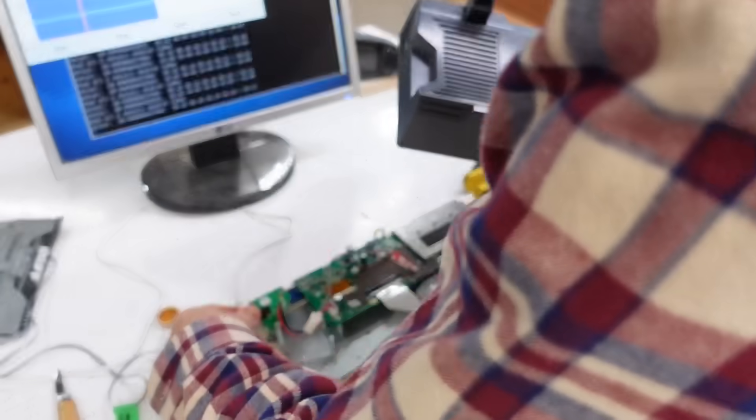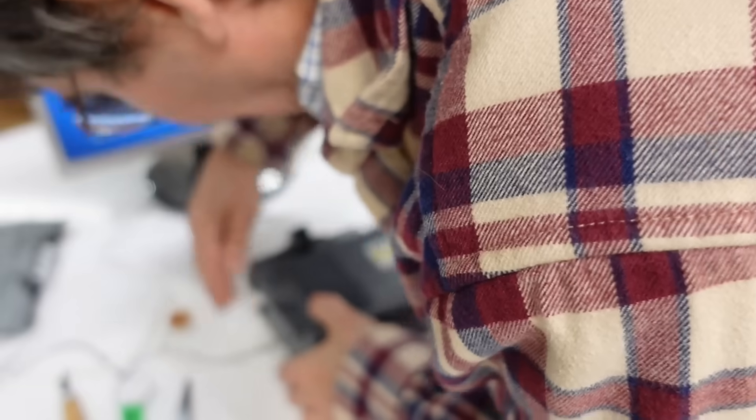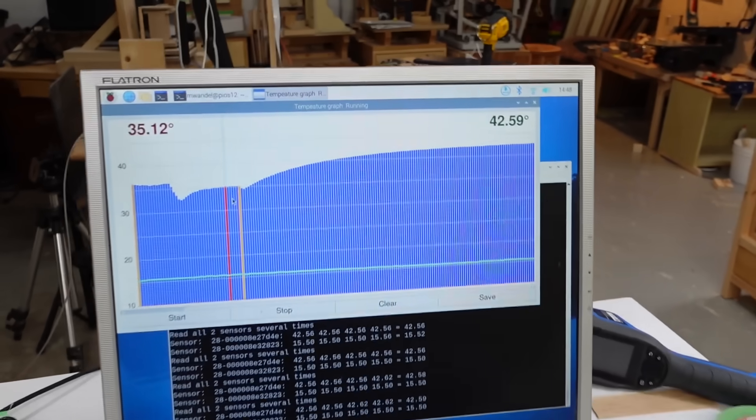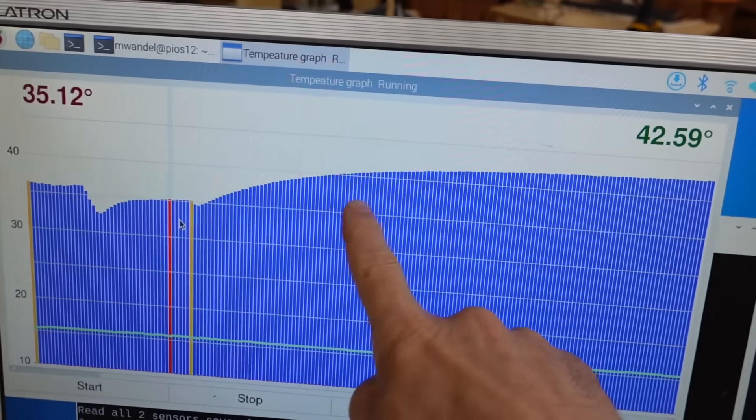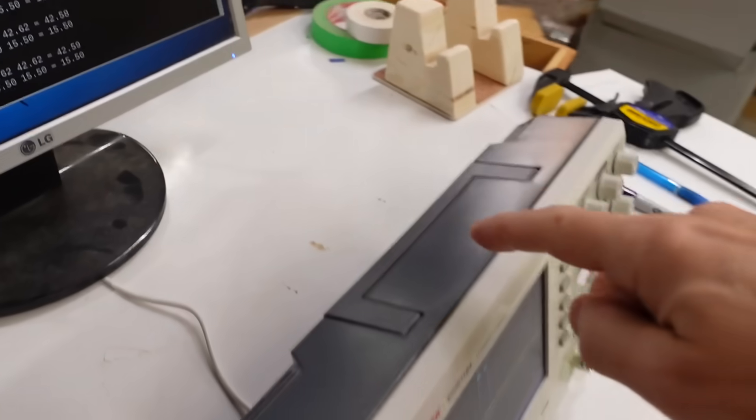But this is all still running without a case so let's put the case on and see what happens. So that is taking quite a while to settle but we have a 7 degree temperature increase from being in the enclosure. Those plastic enclosures can really trap the heat.